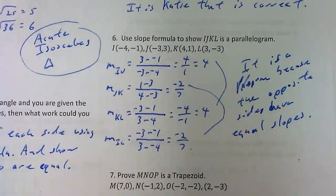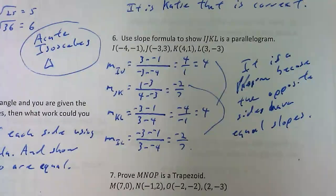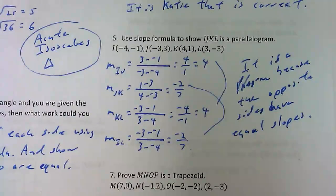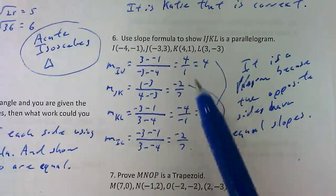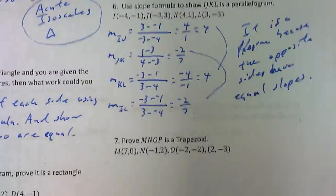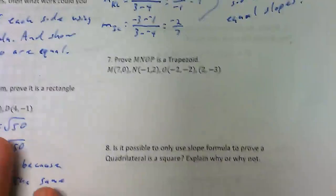If I had asked you to use distance instead of slope, you'd do the distance of all four sides and if the opposite sides are equal it's a parallelogram. If I asked you to use midpoint, you'd find the midpoint of the diagonals - IK and JL - and if they share the same midpoint it's a parallelogram. Those are different ways I could phrase the same type of question.